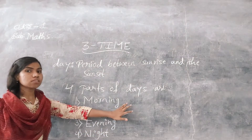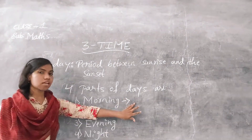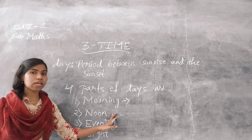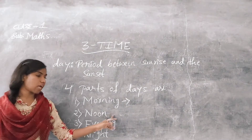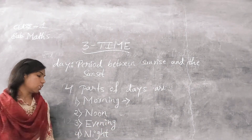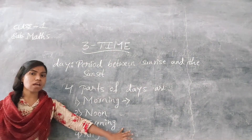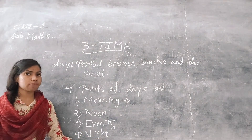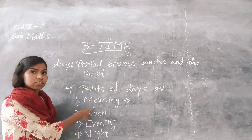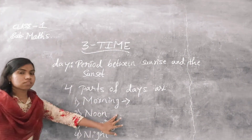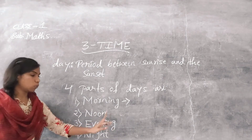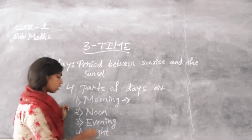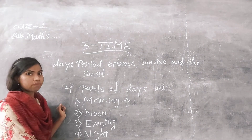Morning means when the sun rises, that is called morning. Noon is the second part of the day. When sunlight starts fading, that is called evening. And when the sun sets, that is called night.